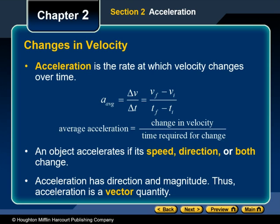You can see that equation represented on the screen here. Acceleration has dimensions of length divided by time squared. The units of acceleration in SI are meters per second per second, which is written as meters per second squared, as is shown on the screen here. When measured in these units, acceleration describes how much the velocity changes each second. At this point, you should be able to attempt sample problem B.